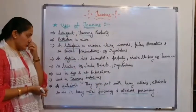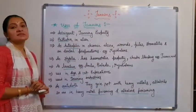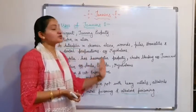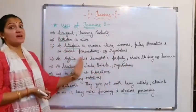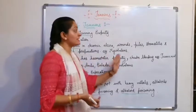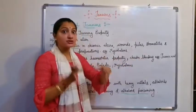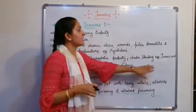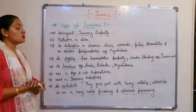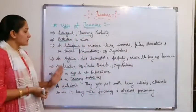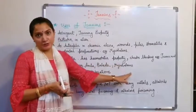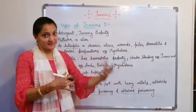The fourth use is as a styptic, meaning they have a hemostatic property — they stop bleeding. Example: tannic acid. Fifth, they are used as a laxative. Drugs like Amla, Bahera, and Myrobalan are used as laxatives.